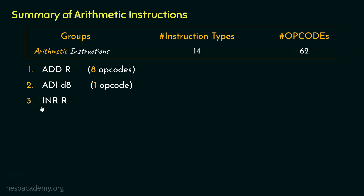Coming to the next instruction type, INRR. Here also we are using capital R, so we are talking about the accumulator and the 6 GPRs — B, C, D, E, H and L — as well as the memory location INRM, which is pointed by the HL register pair. The purpose of this instruction type is to increment the content by 1. So for this instruction type as well, we have 8 different opcodes.